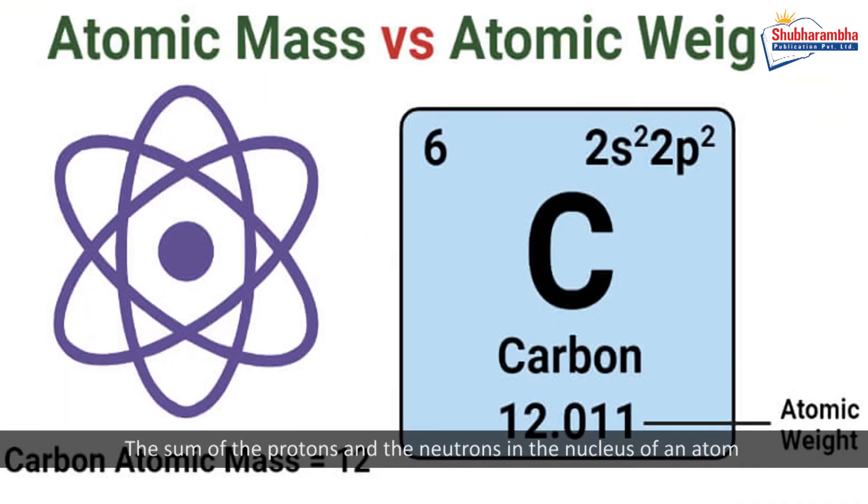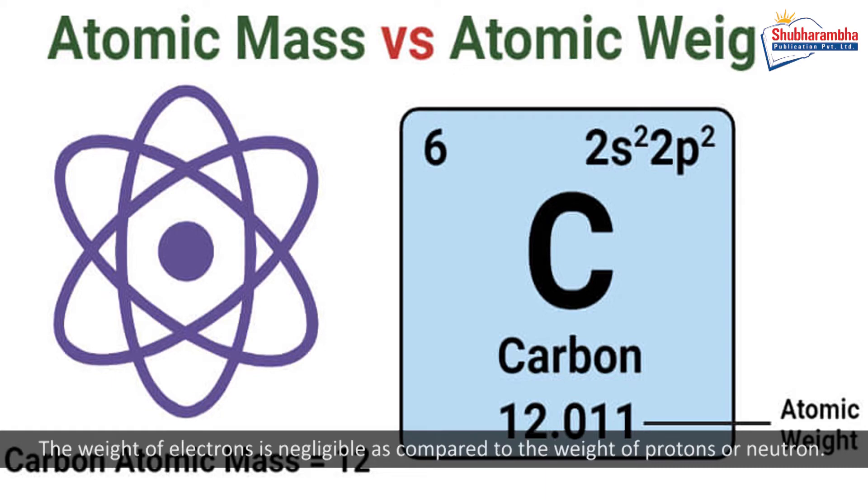Atomic mass or atomic weight. The sum of the protons and the neutrons in the nucleus of an atom is called its atomic weight. It is also called mass number. The weight of electrons is negligible as compared to the weight of protons or neutrons. So, atomic weight does not include the weight of electrons.